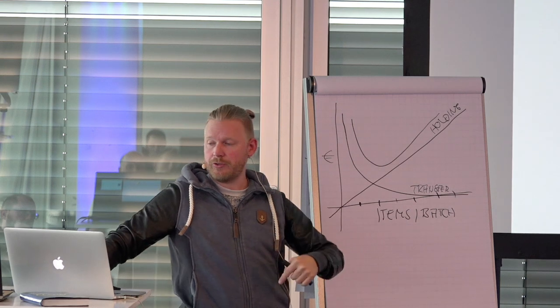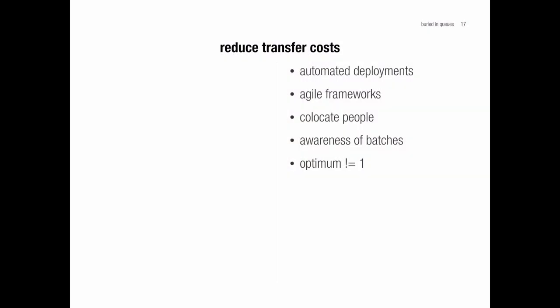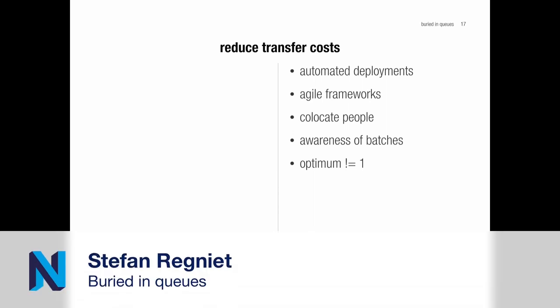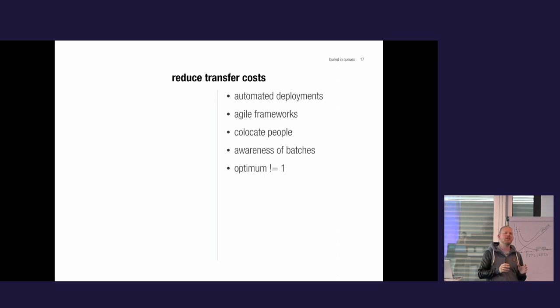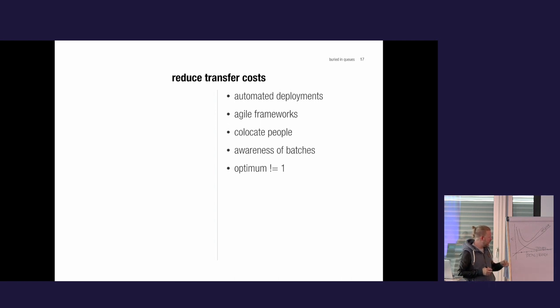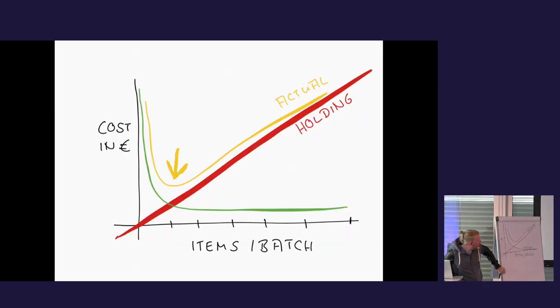You can reduce transfer costs through automated deployments, agile frameworks, or simply co-locating people who work together in the same room. Be aware that a batch size of one isn't always desirable — maybe it's easier to test two or three tickets at once. Optimum doesn't equal one. If you reduce your transfer costs, your overall costs will be reduced, and this is something you can actively do.